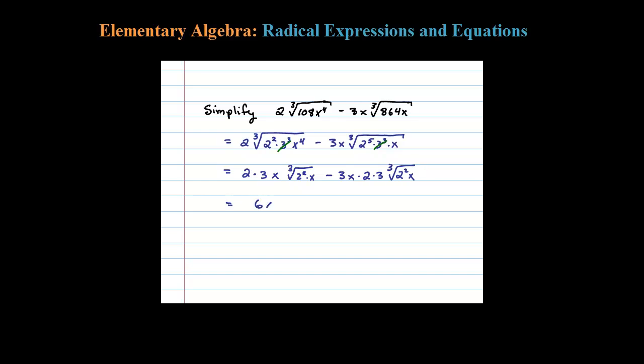Okay, let's simplify. So this leaves me here with six x cubed root of four x minus three times two is six, times three is eighteen x times the cubed root of four x.